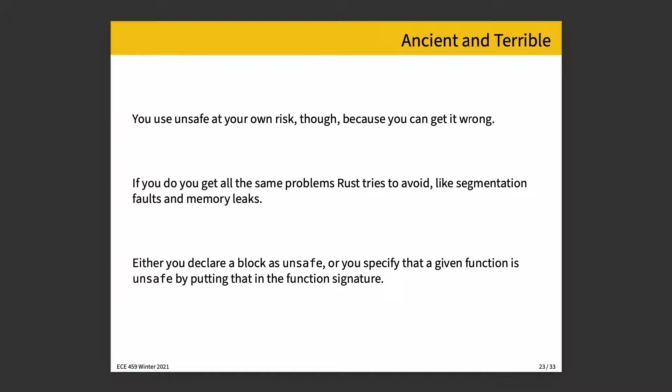There are two ways to declare something as unsafe in Rust. Either you make a block with manual scoping — you say unsafe, open curly brace, and then you have an unsafe block that ends at the closing curly brace — or you put in the function signature that this whole function is unsafe.